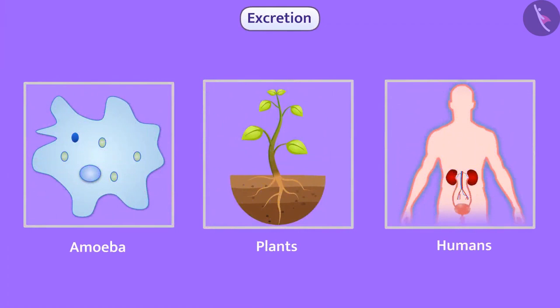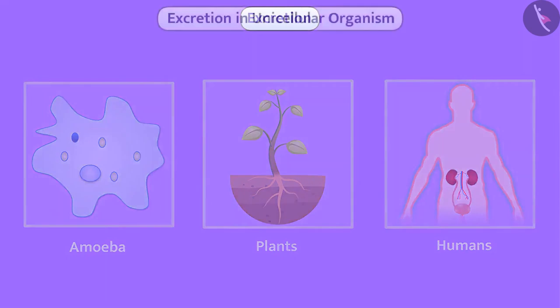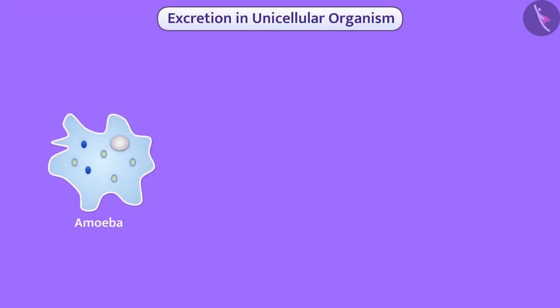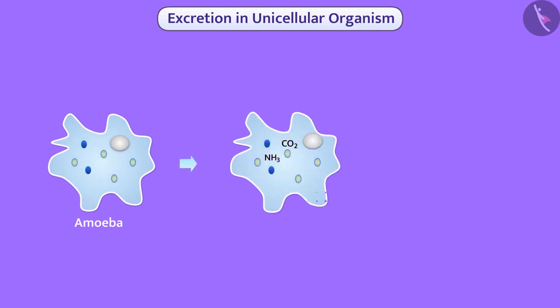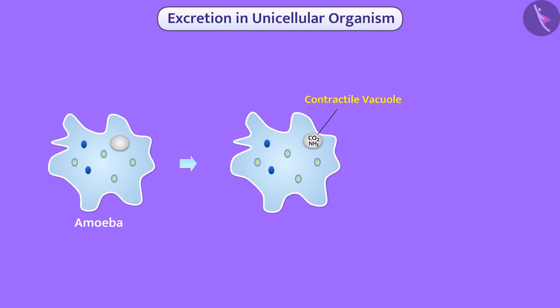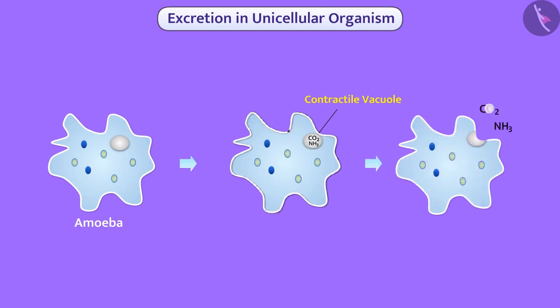Let us see how excretion occurs in different organisms. In the cytoplasm of some unicellular organisms, waste such as carbon dioxide and ammonia gets collected into the contractile vacuole and is excreted outside the cell surface by the process of diffusion.